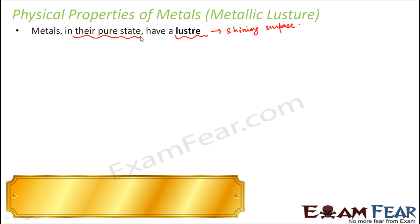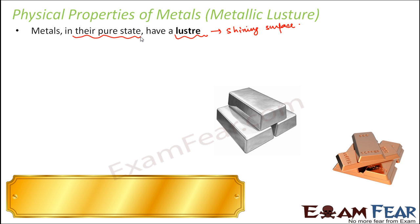For gold and silver, we know how shiny they are — just look at gold or silver jewellery. However, they are mixed with some other things to provide rigidity. But still these metals have a lot of lustre in them. So metallic lustre is a physical property of metals.